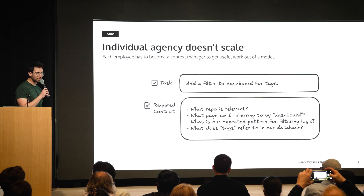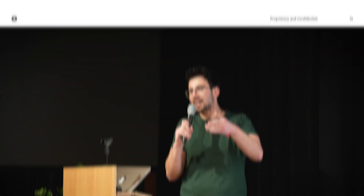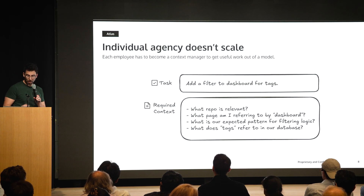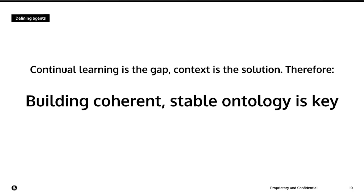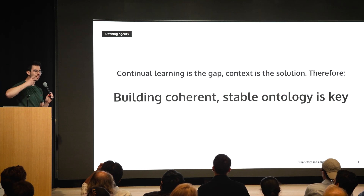Because of that gap, the solution has to be context. Imagine you have a coding agent and you give it a task: 'add a filter to some dashboard.' How does it know what repo you're talking about? How does it know what page you mean when you say 'dashboard'? How does it know which components to use, what the naming patterns are, or what the word 'tags' even means — is that a table in the database, the name of a component, or just internal jargon? It doesn't know any of this. But when you speak to a co-worker, it's obvious. Agents, by default, don't have that. Which is why the most important part of agent building is a coherent, stable ontology — because you're building a world for the agents to live in, since they can't recreate that world themselves.